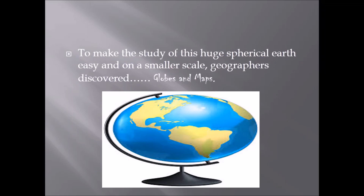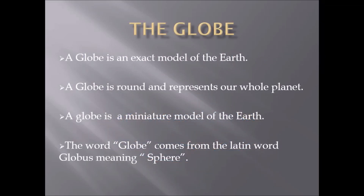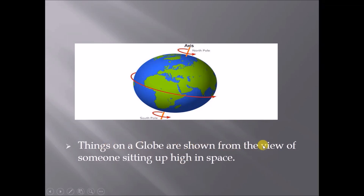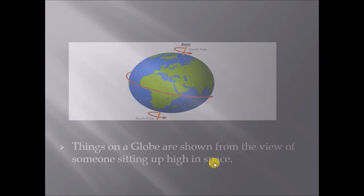To make the study of this spherical Earth easy and on a smaller scale, geographers discovered globes and maps. A globe is an exact model of the Earth — round and representing our whole planet. A globe is a miniature model of the Earth. The word globe comes from the Latin word 'globus', meaning sphere. Things on a globe are shown from the view of someone sitting up high in space.